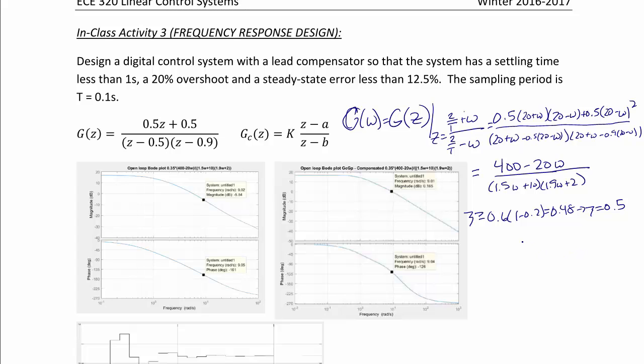We know that the settling time is equal to 4.6 over zeta omega_n, and that equals 1. From that, we can get that omega_n must equal 9.2. We are going to make this omega_max, or our gain crossover frequency.